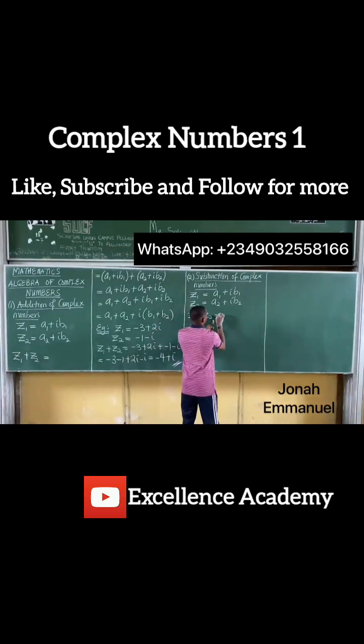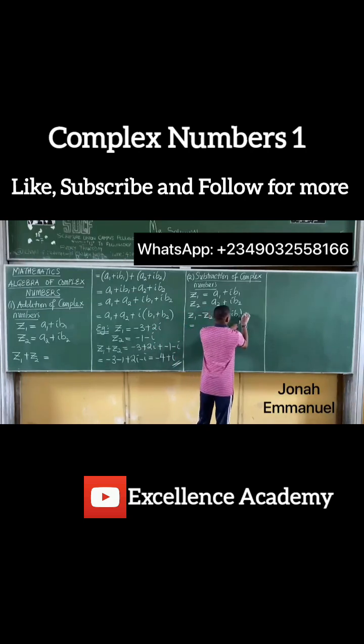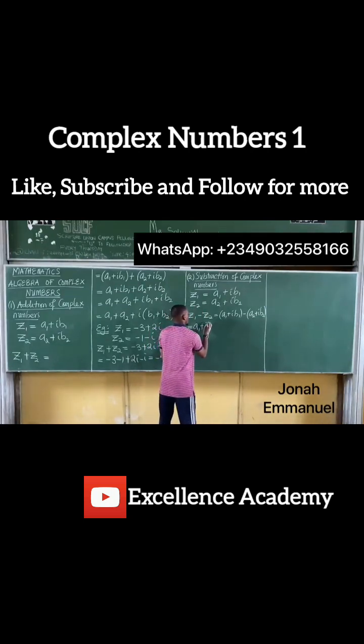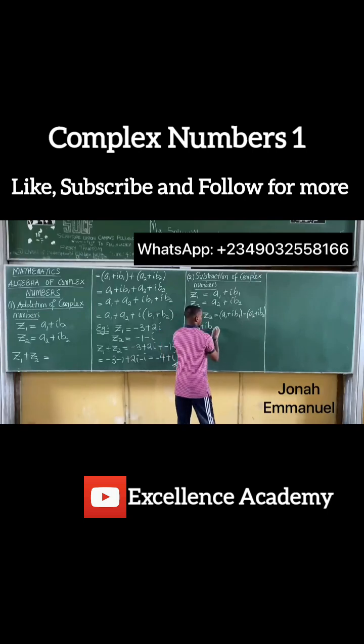That'll be equal to a1 plus ib1 minus a2 plus ib2. That's z1 minus z2. If I expand brackets, I have a1 plus ib1 minus this is minus a2 minus ib2.